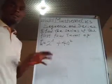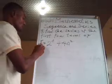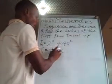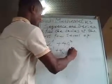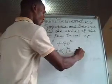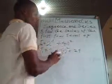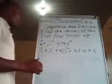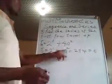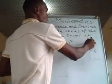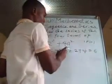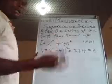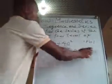Getting the series means we are going to calculate the sequence first. Now t1 will be equal to 2 raised to the power 1 plus 4 times 1 squared. Now 2 raised to the power 1 is 2, and 1 squared is 1, so 4 times 1 gives us 4. Therefore 2 plus 4 gives us 6.